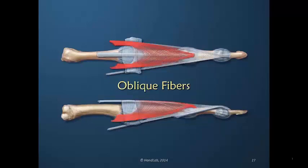The oblique fibers make up the majority of the proximal aspect of the dorsal apparatus and they coalesce to insert distal to the proximal interphalangeal joint at the central slip insertion. The oblique fibers are primarily responsible for PIP joint extension, though they get some help from the extensor digitorum communis power. If this portion of the dorsal apparatus is moving proximally, the remainder also has tension applied by virtue of that proximal tension — so it is never just the oblique fibers working alone.